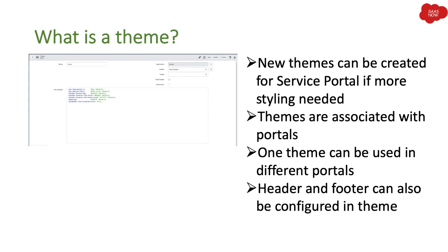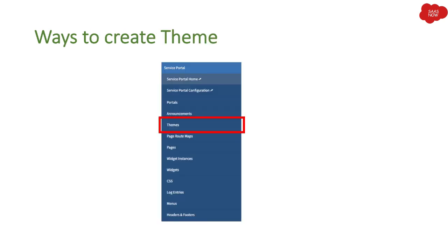If you want to do more customization around styling — better colors at the top, at the bottom, or in the middle — you can do that with the help of themes. Now there are two ways to create themes in ServiceNow. The first way is with the application navigator: in the Service Portal application you have a module called Themes. When you click on Themes it shows you the list of themes in your instance, and there is a New button at the top to create a new theme record.